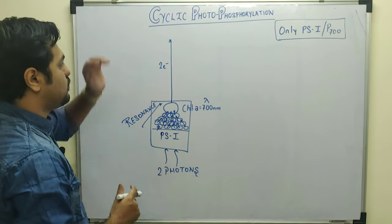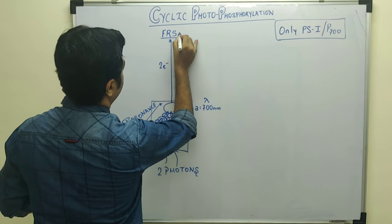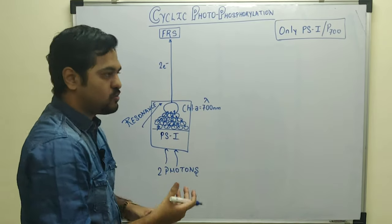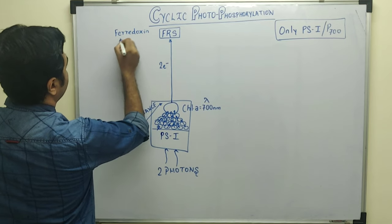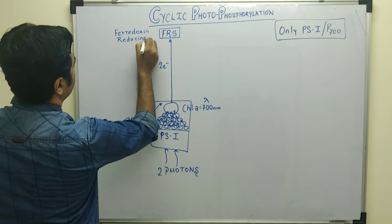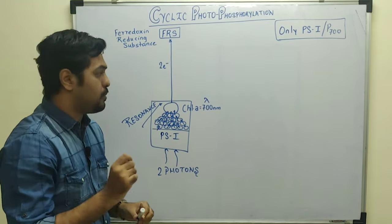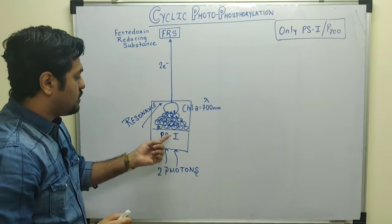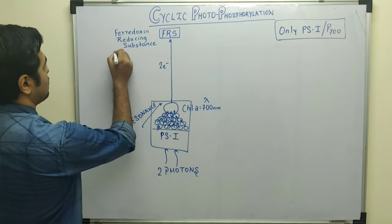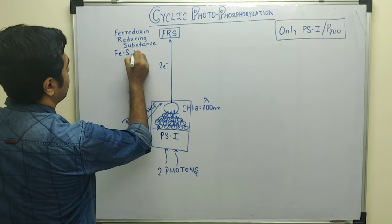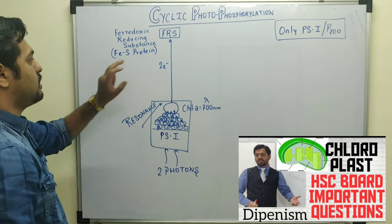When electrons are expelled from PS1, they are absorbed by the first electron acceptor known as FRS — Ferredoxin Reducing Substance. In previous NEET questions, FRS is sometimes not listed in options; instead it appears as iron-sulfur protein (FeS protein), which is also the first electron acceptor. FRS is nothing but an iron-sulfur protein. This FRS then transfers the two electrons to the next electron acceptor — FD, which stands for Ferredoxin.